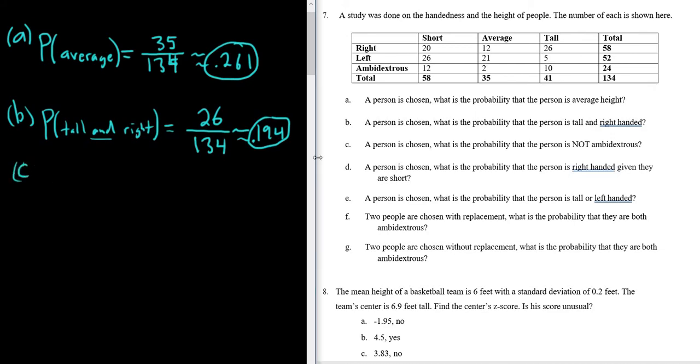Part C. A person is chosen. What is the probability the person is not ambidextrous? So P, not ambi. So not ambi. So we have 24 people that are ambidextrous. If you go to ambidextrous, that's how many are ambidextrous. We have 134 total.